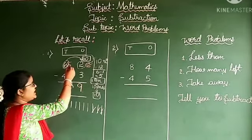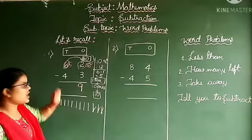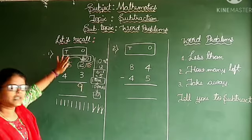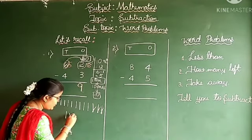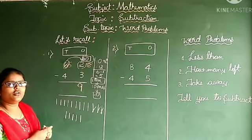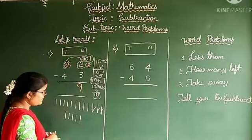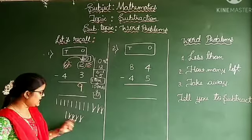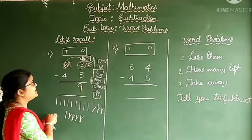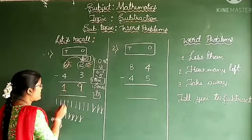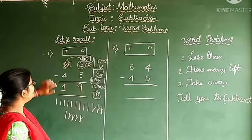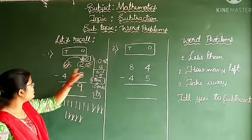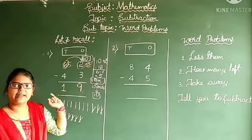Now take the difference between 5 minus 4. Keep 5 lines, strike out 4 lines — 1, 2, 3, 4. Left with 1 line. Write down 1 under the 10s place. Now our difference is 19. Therefore, 62 minus 43 equals 19.